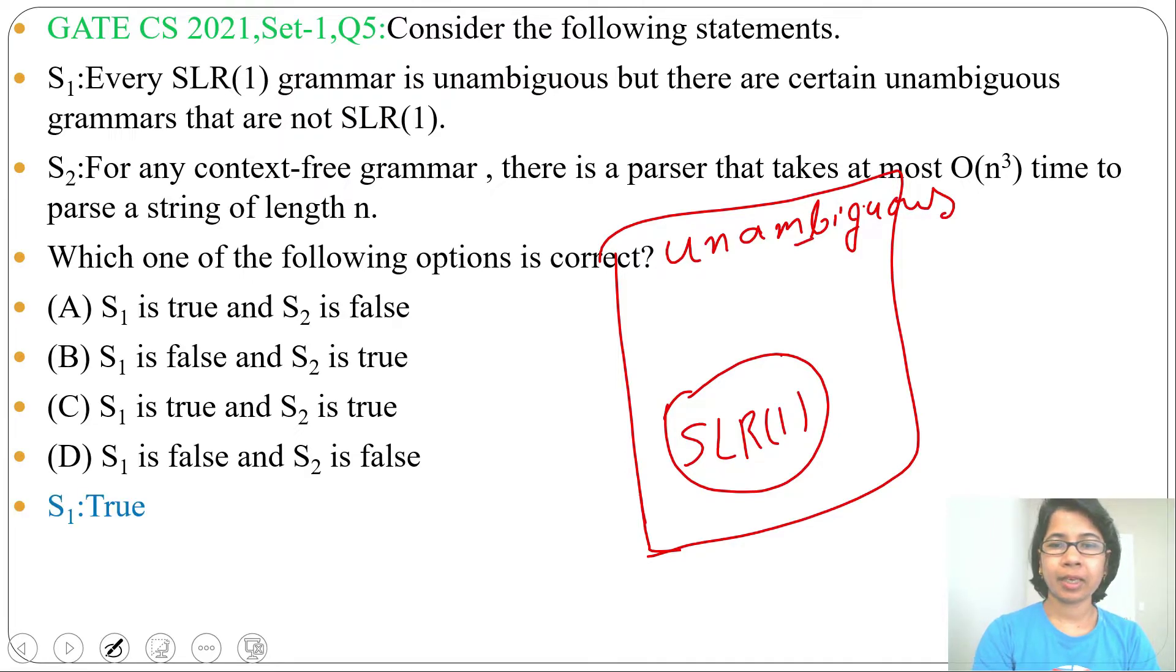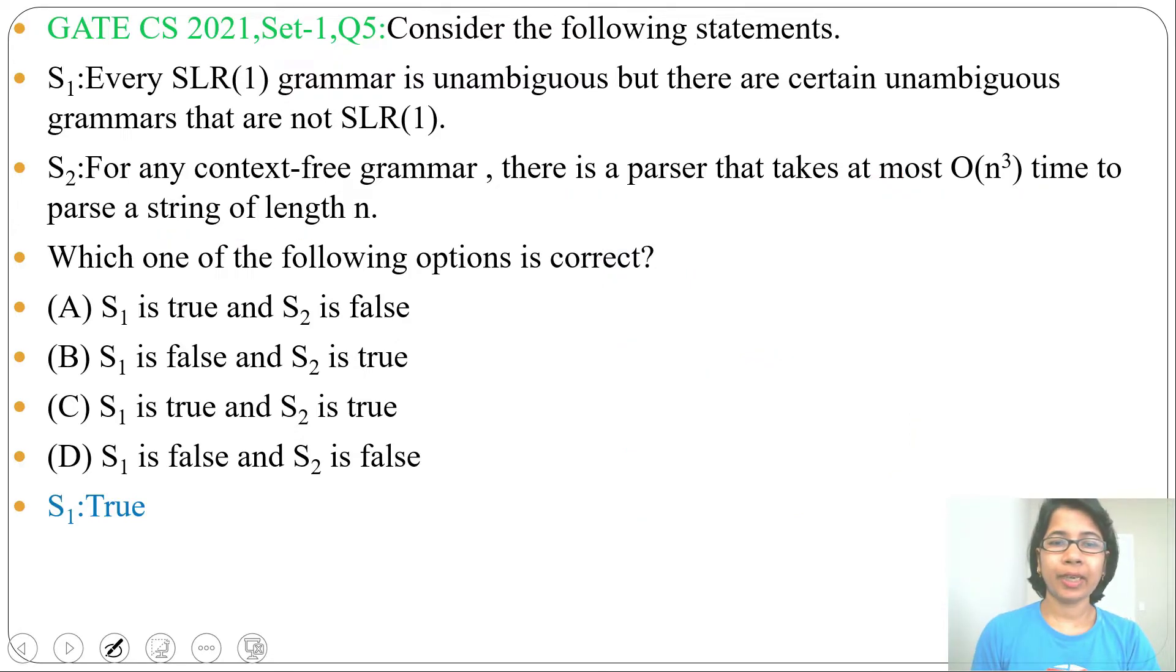Then Statement 2: For any context-free grammar, there is a parser that takes at most O(n³) time to parse a string of length n. This is true for any context-free grammar. Either you can do top-down parsing or bottom-up parsing.